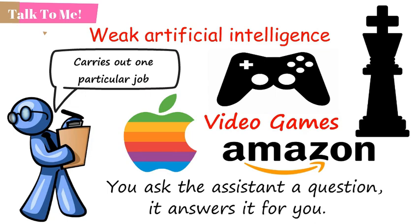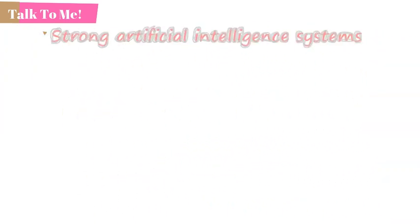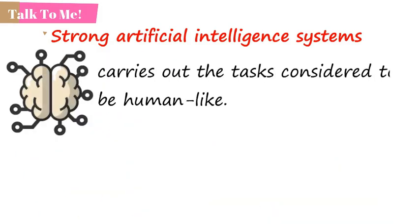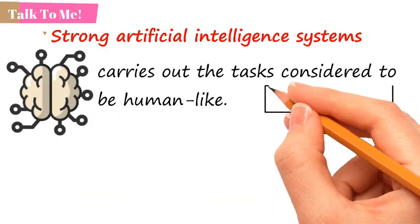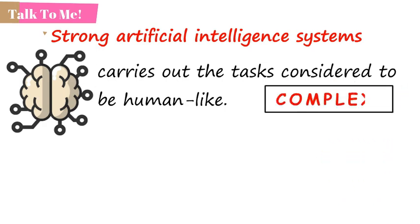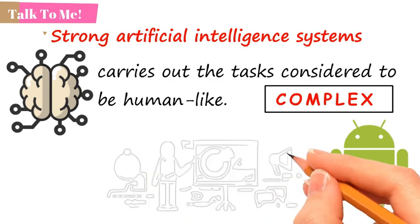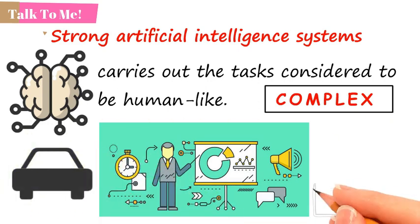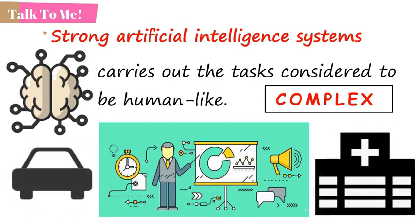On the other hand, strong artificial intelligence systems are systems that carry out the tasks considered to be human-like. These tend to be more complex and complicated systems. They are programmed to handle situations in which they may be required to solve the problem without having a person intervene. These kinds of systems can be found in applications like self-driving cars or in hospital operating theaters.